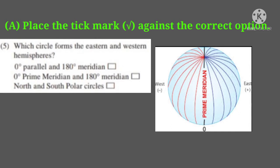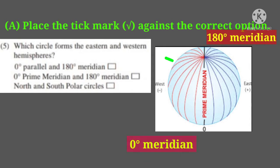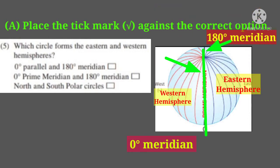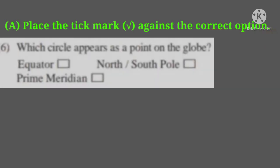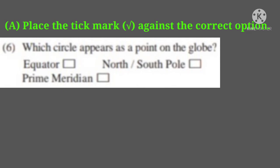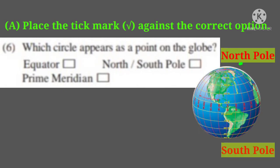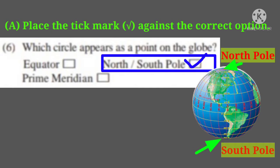Fifth question: which circle forms the eastern and western hemispheres? The three options are: 0 degree parallel and 180 degree meridian; 0 degree prime meridian and 180 degree meridian; and north and south polar circles. The correct answer is 0 degree prime meridian and 180 degree meridian. Sixth question: which circle appears as a point on the globe? Options are equator, north or south pole, and prime meridian. The correct answer is north or south pole.